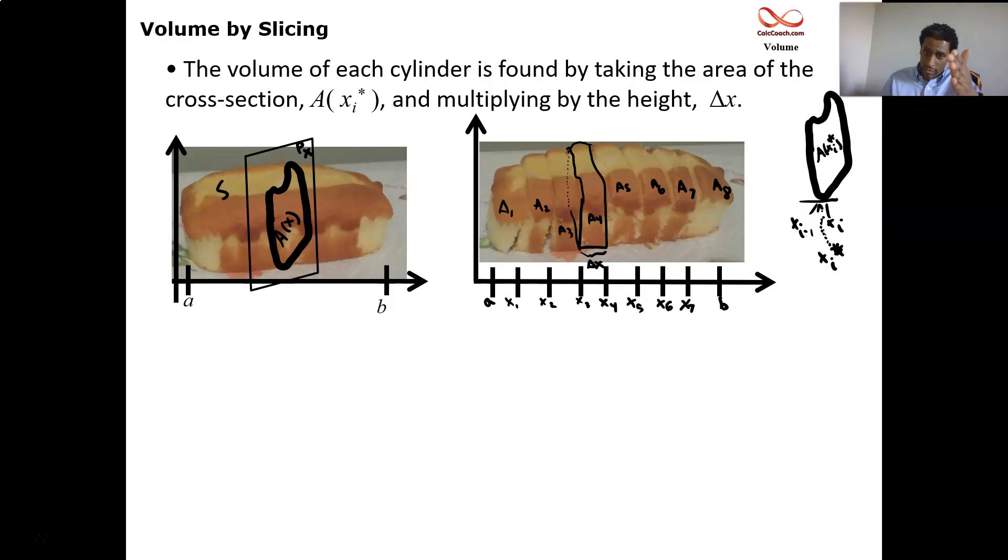It could be X_i minus one, which is the left endpoint. It could be X_i, which is the right endpoint, or it could be just some place generically called X_i star. And so this particular picture has eight different slices, all varying different shapes. Some of them look kind of similar, but each one has its own area formula. And so we want to be able to calculate that area formula and multiply it by the delta X, which we're going to try to keep the same throughout.